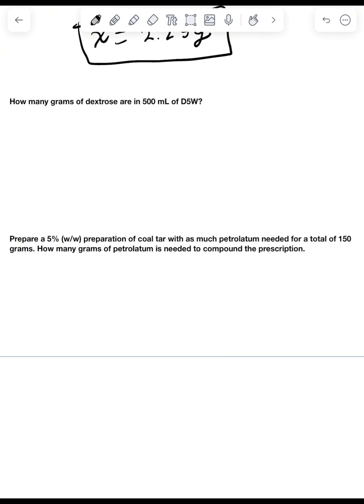Okay next one, how many grams of dextrose are in 500 ml of D5W? Again pause the video, try it yourself. So we know in D5W we have 5% and since it's in weight it's going to be 5 grams. So setting it up it's going to be 5 grams all over 100 ml because it's 5% and we're going to set that equal to x over 500 ml grams. And then from there, pretty simple, you just set up your equation. x equals 25 grams.